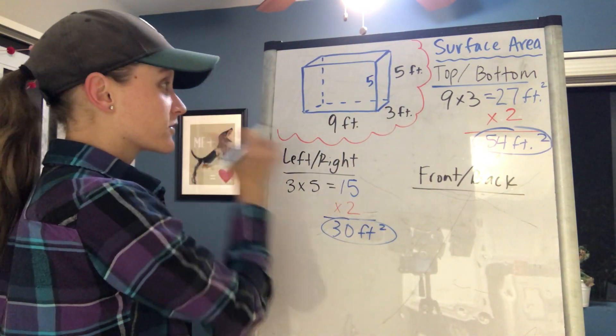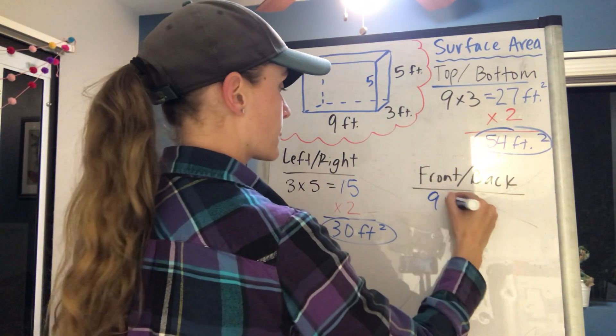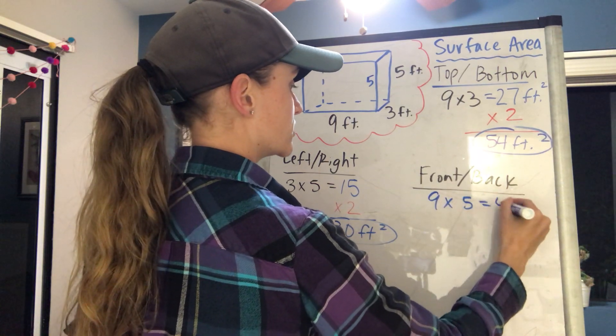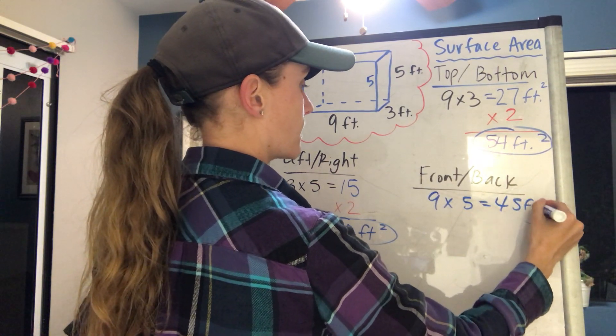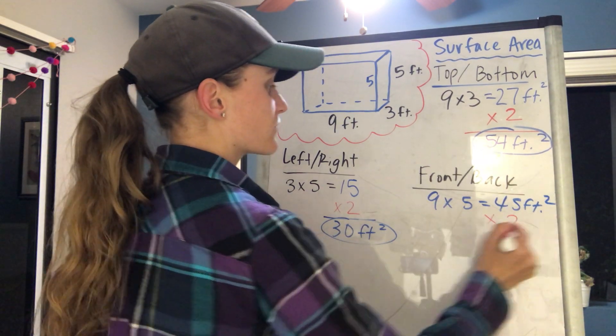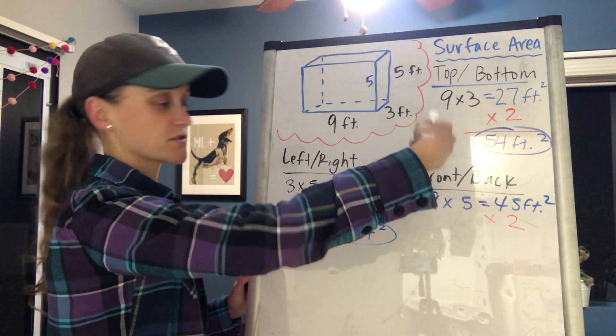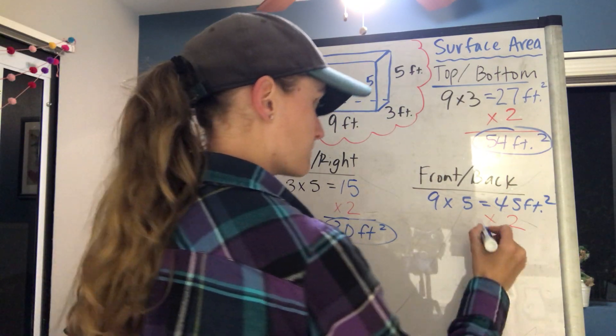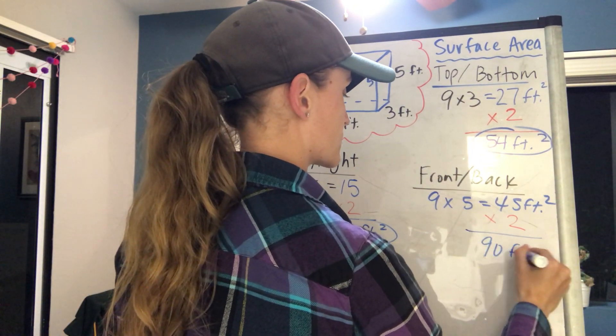So for the front, I have 9 times 5, which equals 45. Remember again, I'm gonna multiply by 2 because the front is 45 and then the back is 45, so that's gonna give me 90 feet squared.